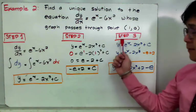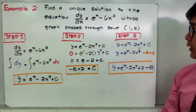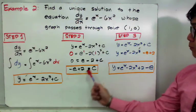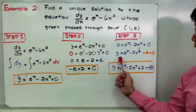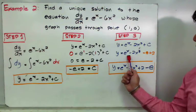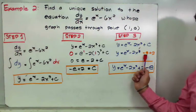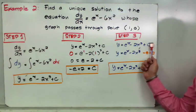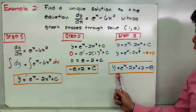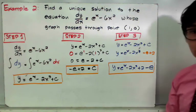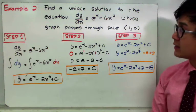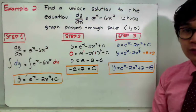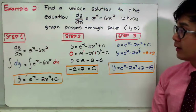For step 3, we complete our equation by replacing C with negative e plus 2. So we have y = e^x minus 2x cubed minus e plus 2, which simplifies to y = e^x minus 2x cubed plus 2 minus e. This is the particular solution for example 2.